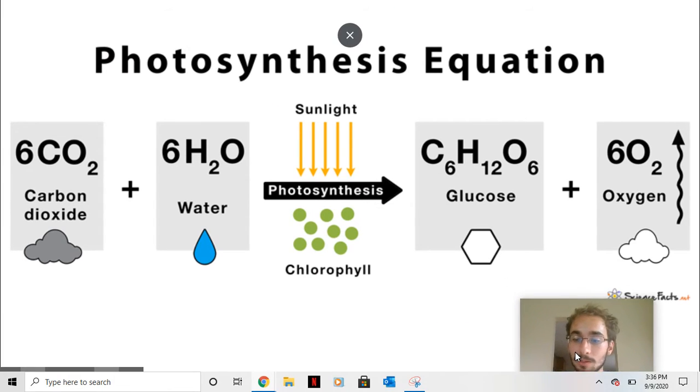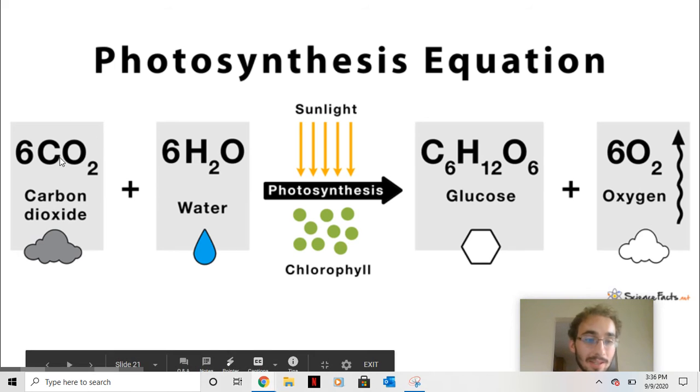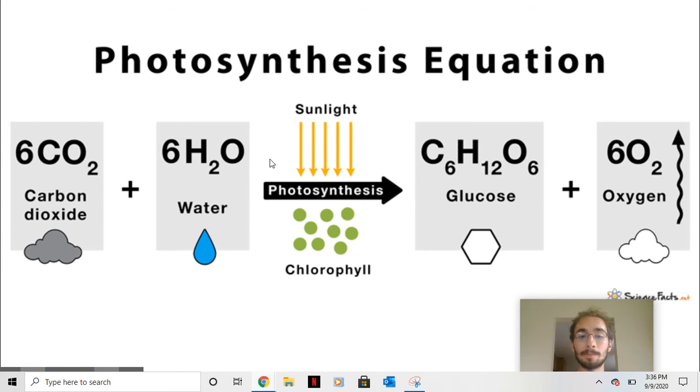Next, here is the equation. It should be in your notes. So you have six carbon dioxide, six water, and then sunlight helps it convert into glucose and oxygen.